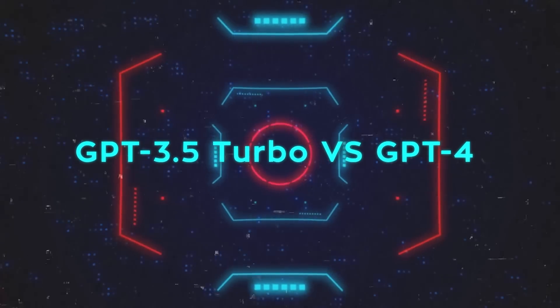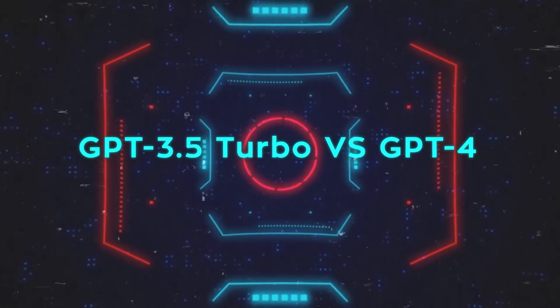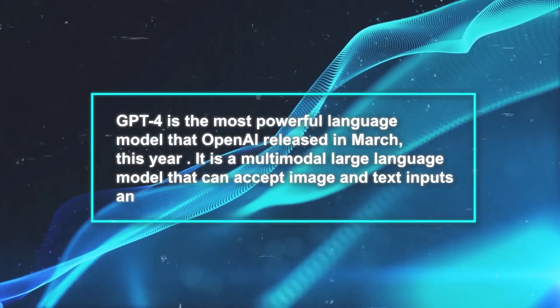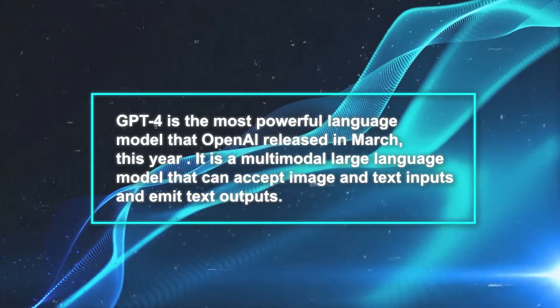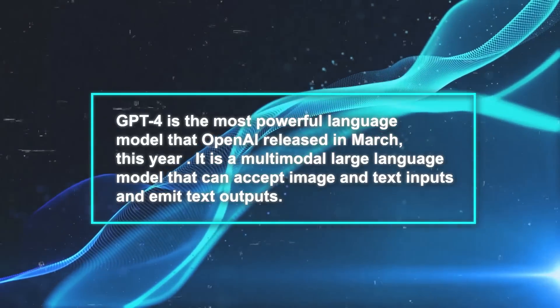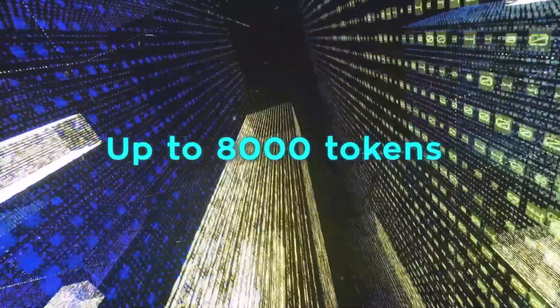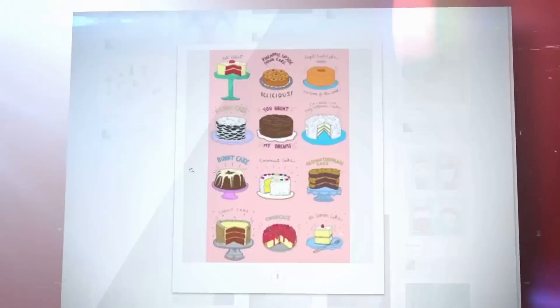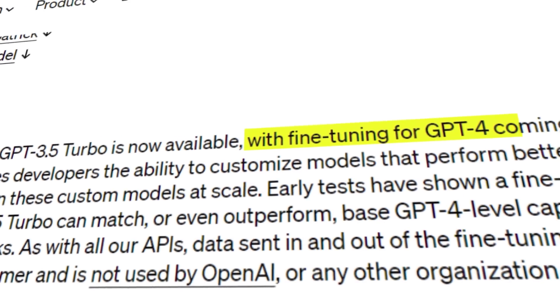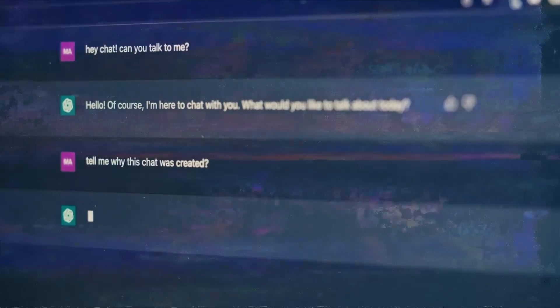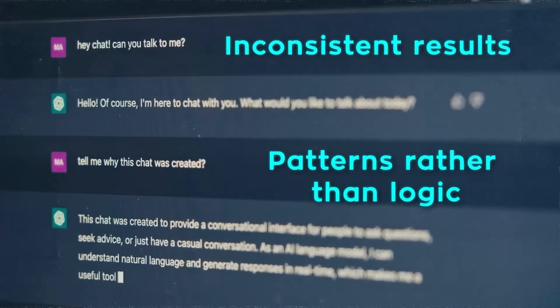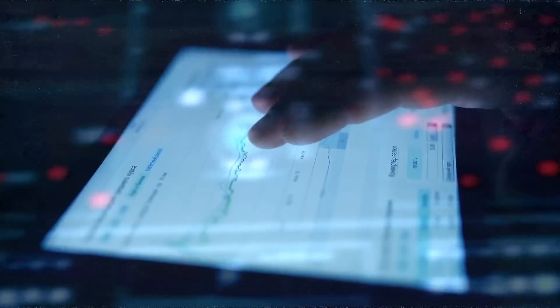But what about GPT-4? How does it compare with GPT-3.5 Turbo in terms of fine-tuning? GPT-4 is the most powerful language model OpenAI released in March this year. It is a multimodal large language model that can accept image and text inputs and emit text outputs — more powerful than GPT-3.5 in terms of size, speed, and generality. It can process up to 8K tokens at once, twice as much as GPT-3.5, and can handle complex tasks such as image captioning, visual question answering, and text-to-image generation. However, GPT-4 has areas that need refining and is not yet available for fine-tuning, though OpenAI intends to release this capability later this year. Given that GPT-4 can produce inconsistent results and leans more towards recognizing patterns than applying real logic — combined with its high cost — one might wonder: is it worth paying for GPT-4 when you can use a fine-tuned GPT-3.5 for much less?